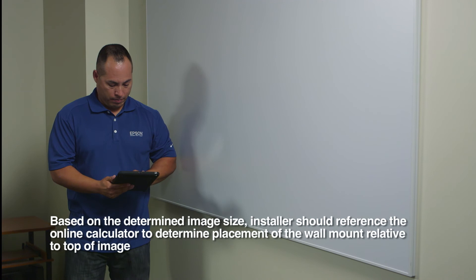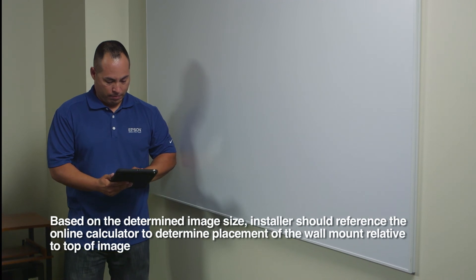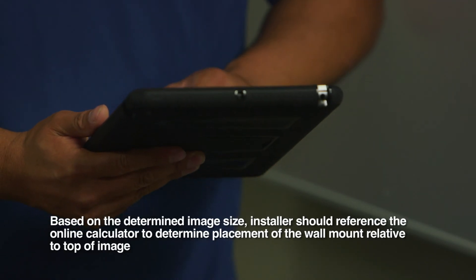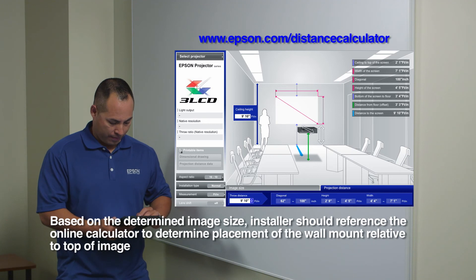After determining the image size, use the Epson online distance calculator to determine where to place the wall mount plate relative to the board.